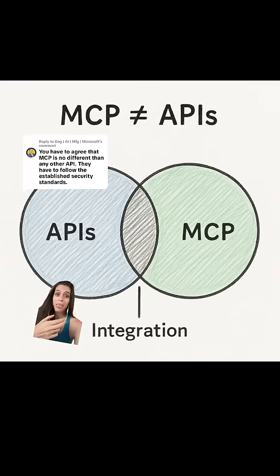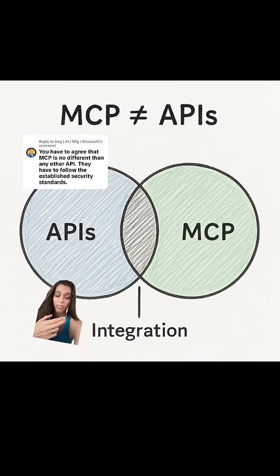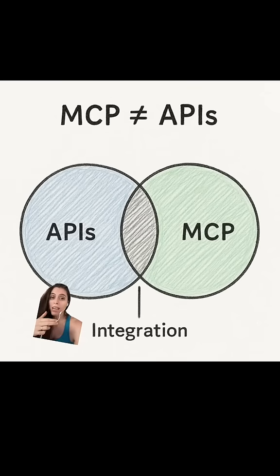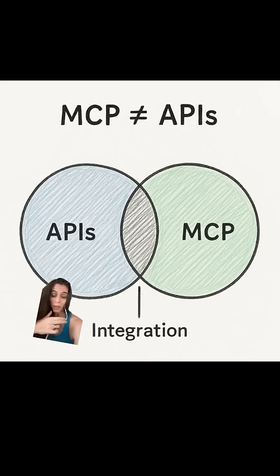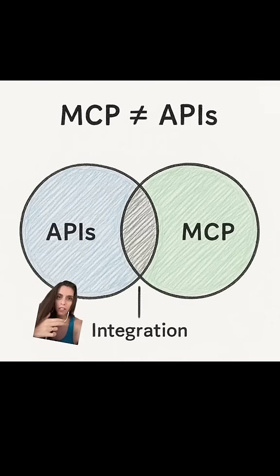MCP and APIs are incredibly different, especially when it comes to your security posture, and it is a dangerous, dangerous mistake to think otherwise. APIs don't cause arbitrary, untrusted code to run in sensitive environments. MCP, however, does — which means that you need a completely different security model.